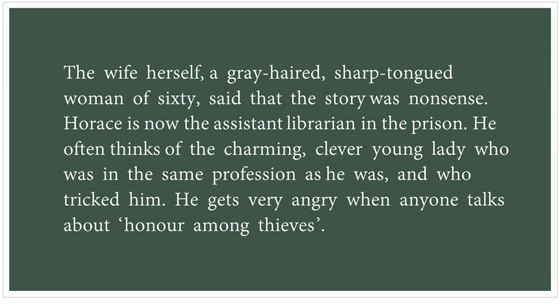So to summarize: Horace Danby was a respectable man who made locks and had two helpers. He stole once a year just to buy rare and expensive books. In his plan to steal, he was cheated by a young lady pretending to be the owner of the house — that is why he gets angry when anybody talks about honor among thieves. Thieves are supposed to help each other, but she cheated him, took the jewels, and escaped while he ended up in prison.